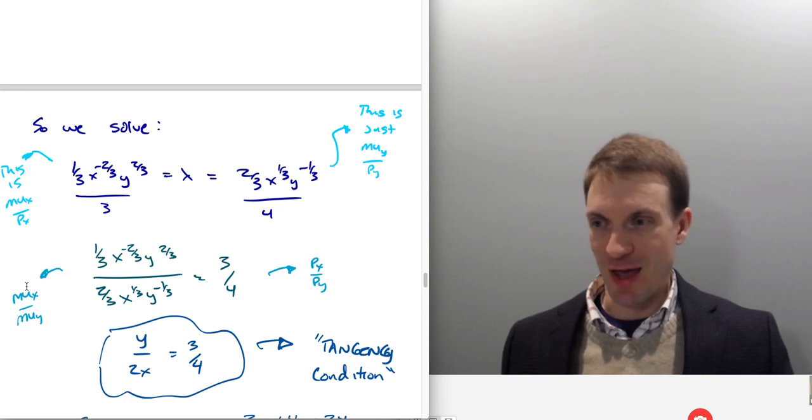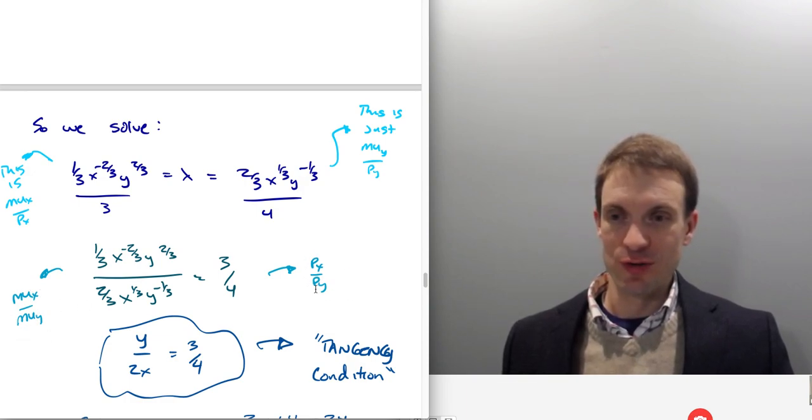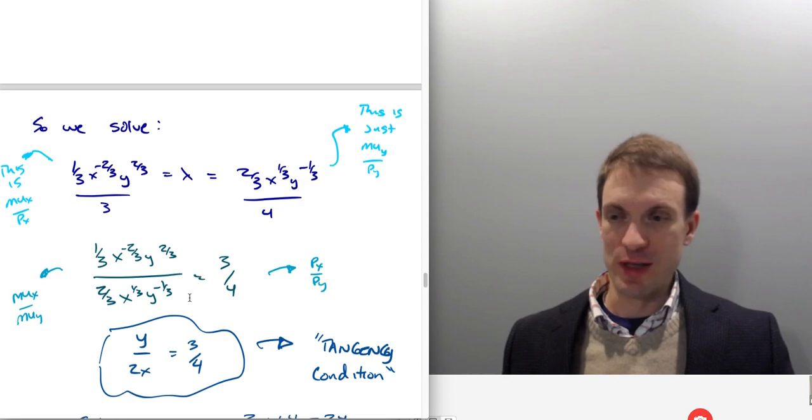So let's cross multiply, and now I have marginal rate of substitution, which is the ratio of marginal utilities, is equal to the price ratio. So now it's just a little bit of algebra to clean things up here.